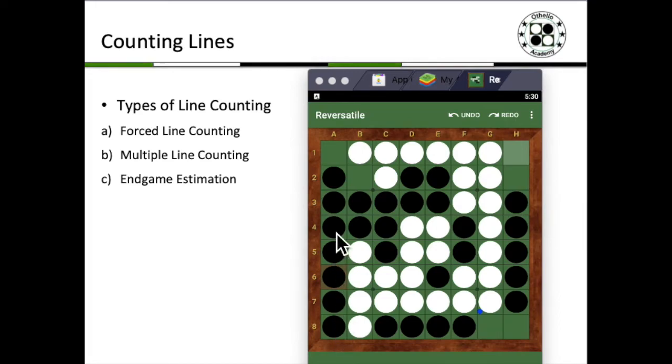You essentially already have the left edge as a stable disc and by capturing H1 and H2 exchange followed by A1, you essentially capture this lead diagonal and also another top edge. So if you consider the entire board dimension being 8 by 8, by securing 3 edges, you essentially have more or less at least 21 or 22 discs secured.